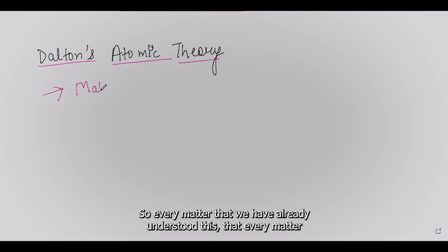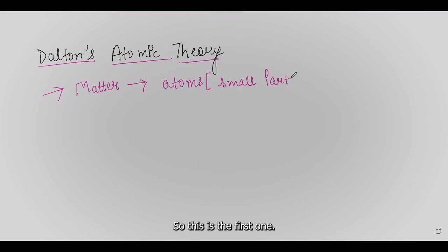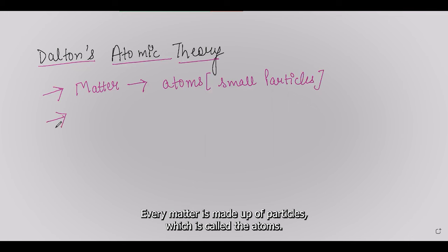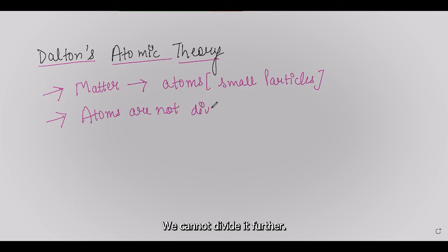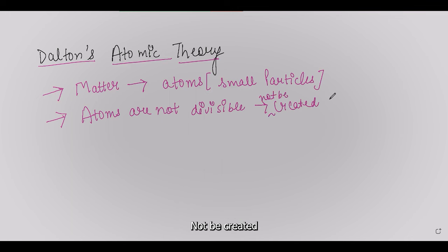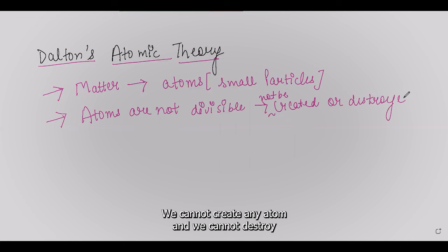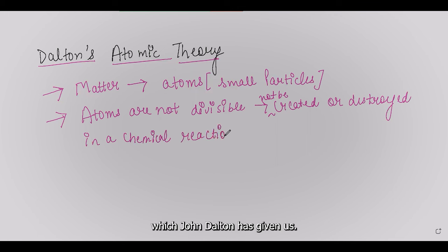The first postulate: every matter is made up of very small, tiny particles called atoms. The second postulate: atoms are not divisible — we cannot divide them further. They are the smallest part of matter and cannot be created or destroyed in a chemical reaction.